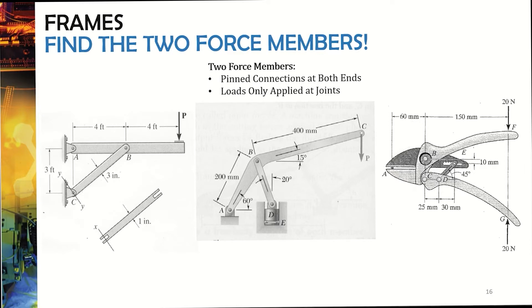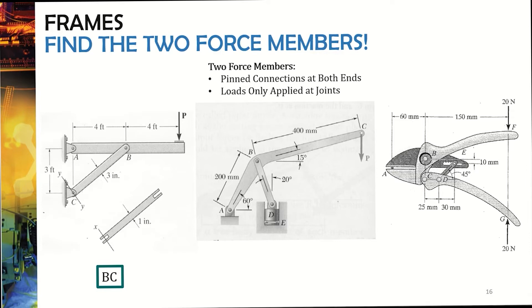For part one, the two-force member is member BC — it has pin connections at both B and C and no loads applied anywhere except at those pins. Member AB is not a two-force member because, although it has pins at A and B, force P is applied away from the pins. In the second example, member ABC has a load applied at point C which is not a joint between pins, so it's not a two-force member. Member BD, however, has pins at B and D with no loads elsewhere, so BD is a two-force member.